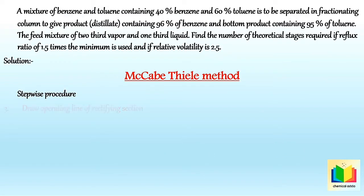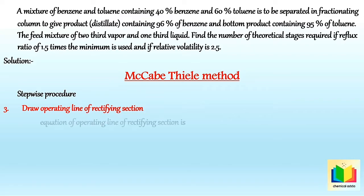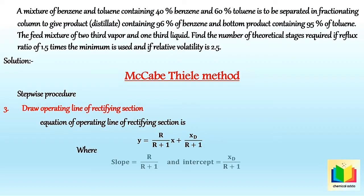The third step is to draw the operating line of the rectifying section. The equation of the operating line of the rectifying section is y = (r/(r+1))*x + xD/(r+1), where r/(r+1) is the slope and xD/(r+1) is the intercept. In this example, the reflux ratio r = 1.5 * rm, the minimum reflux ratio. So to calculate r, we first need to calculate rm.